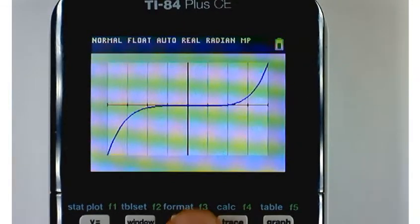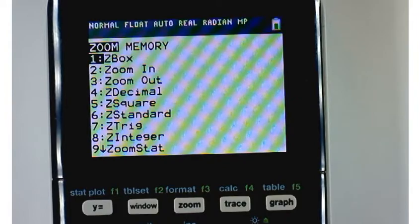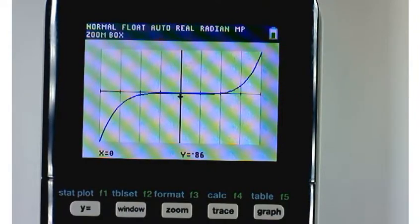So press the zoom key, and then the first option there is zoom box. So press that. And it's going to put a cursor on your graph. Now slide over to somewhere around, say, negative two. It doesn't have to be exactly on negative two. And press the enter key, because this is going to be one corner of our new viewing window.